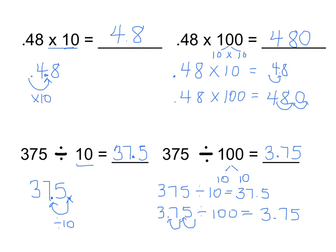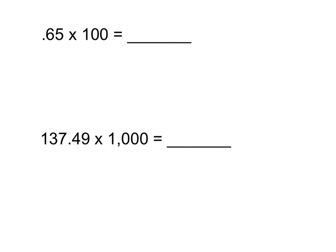Let's practice a little bit more. On this page we have 65 hundredths times 100. I'm going to practice by knowing that when I multiply, I'm moving my decimal place to the right for each multiplication of 10. This is the same thing as 10 times 10. Sometimes it helps to put a story context into these problems — let's imagine that 65 hundredths is 65 cents per candy bar, and the store is buying 100 candy bars.